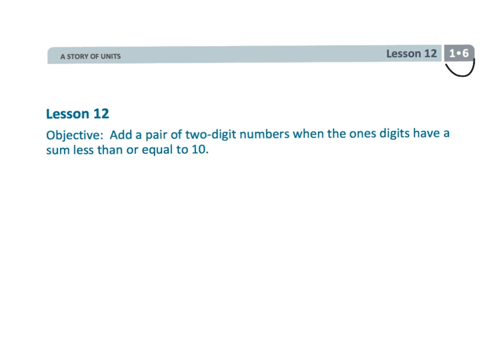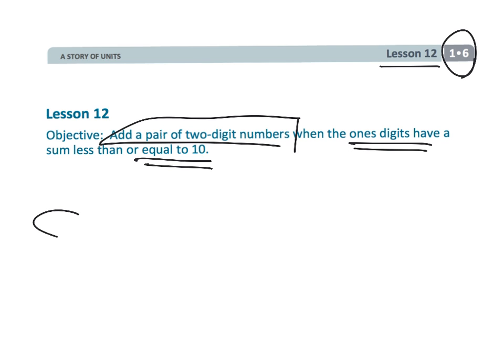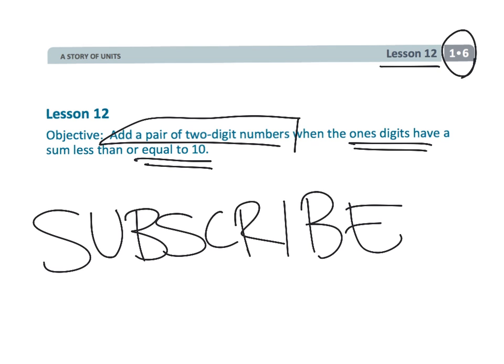And that wraps up first grade module 6 lesson 12. We're adding two two-digit numbers where the ones digits generally is going to be less than 10, although those ones digits might equal 10. Hey, if these videos are helping you at all, please do me a favor, go ahead and subscribe to my channel and consider telling a friend.